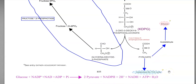Finally, we look at the overall reaction of the ED pathway. Glucose in the presence of NADP, NAD, inorganic phosphate, and ADP is converted into 2 molecules of pyruvate, NADPH, and NADH2. These are reducing equivalents that can be used for other biosynthesis processes. Additionally, ATP and water are produced as end products of this ED pathway.